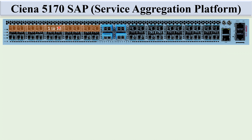The slot numbers run from one to ten. The port numbers are arranged as follows: port number 1 to 10, port number 11 to 20, port number 21 to 30, and port number 31 to 40. These 40 ports are used for the client interface, or you can say for traffic.